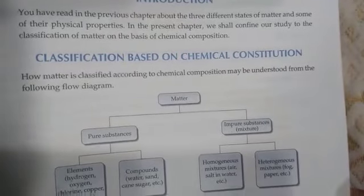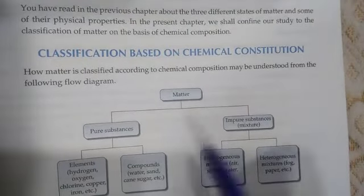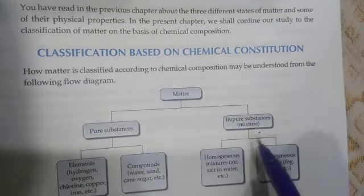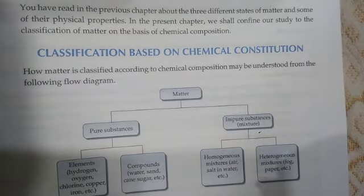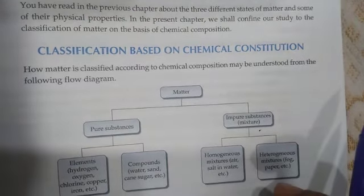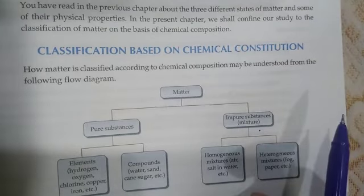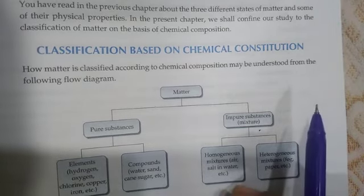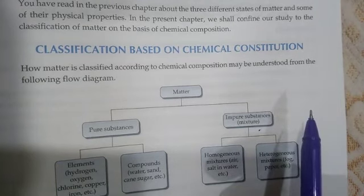We will discuss the classification based on chemical composition — pure substances and impure substances. Is matter around us pure? How do you judge whether milk, ghee, butter, salt, spices, mineral water, or juice bought from the market is pure? Labels say 'pure ghee', 'iodized salt', 'pure milk' — but how can you identify whether these things are actually pure?